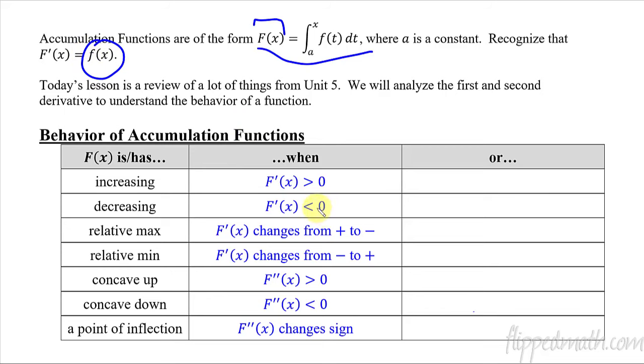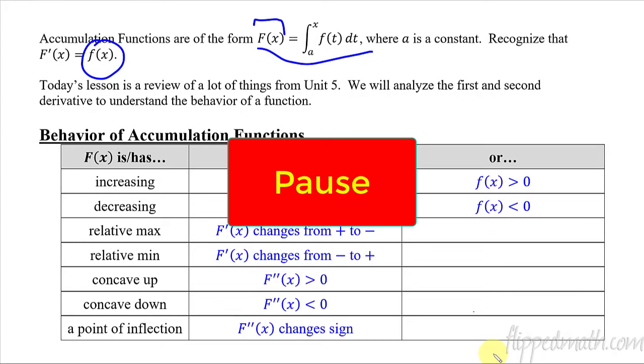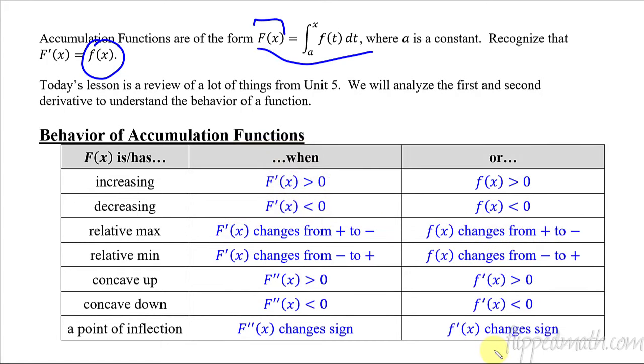So what we want to put together is that now, if we have an accumulation function, its derivative is this. So instead of just saying capital F prime of x is greater than 0, we can say little f of x is greater than 0. Or in this case, little f of x is less than 0. Now just make these answers correlate over here to match up what you think they would look like. So pause and get the rest of these written down.